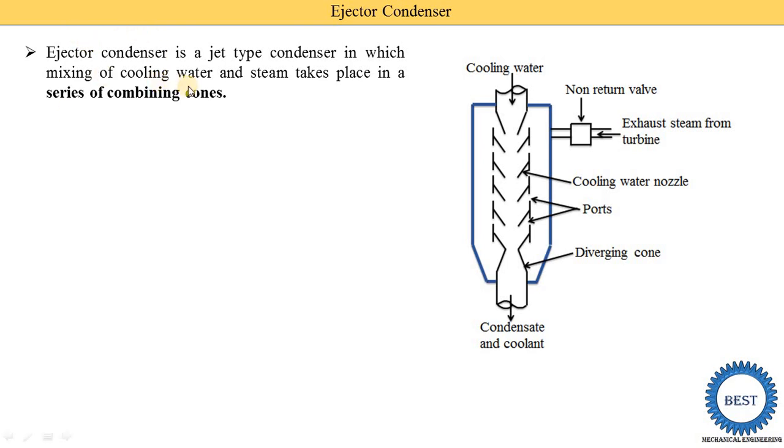In this condenser, mixing of cooling water and steam takes place in a series of combining cones. Cone means the nozzles. There is a number of cones or nozzles. In these nozzles, mixing of cooling water and steam takes place. From here, the condensate and coolant is supplied to the pump and through the pump, it is supplied to the boiler.